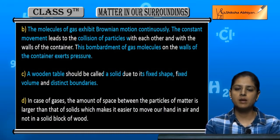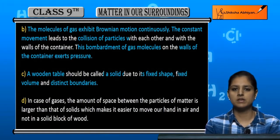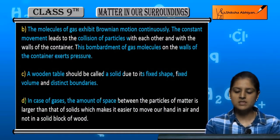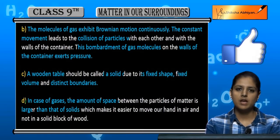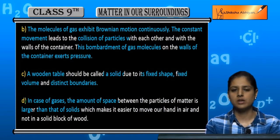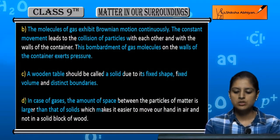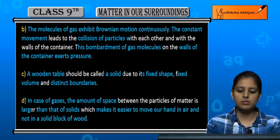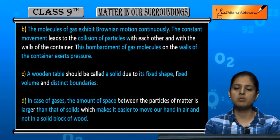Third: we can easily move our hand in air but not through a block of wood. Air is a gas and wood is a solid. The intermolecular spaces in air are much larger than those in solids. Therefore, it is easier for us to move our hands in air. In a solid wooden block, the spaces between particles are very small, so it is difficult to move our hand through it.